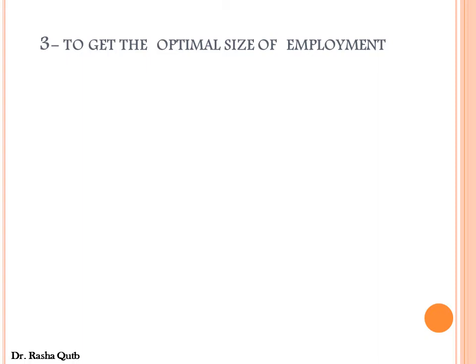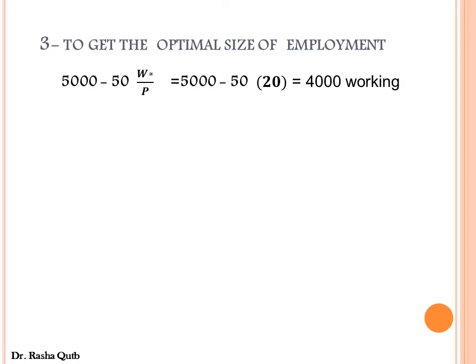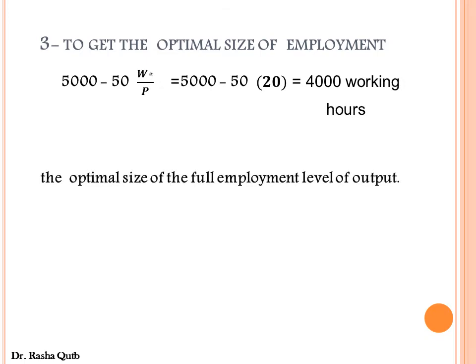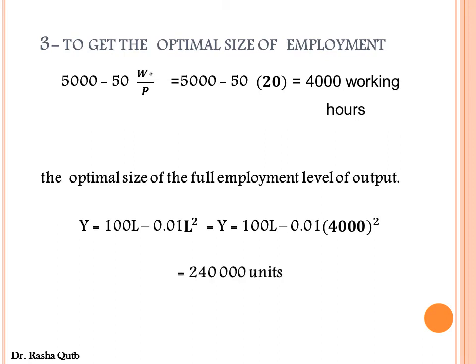Next, in order to get the optimal size of employment, we substitute the equilibrium real wages either into the supply function of labor or the labor demand function. Thereby we get the equilibrium or optimal size of employment, which is 4,000 working hours. To get the optimal size of output — the full employment level of output — we substitute the optimal size of labor, 4,000 working hours, into the output function, and we get the full employment level of output.